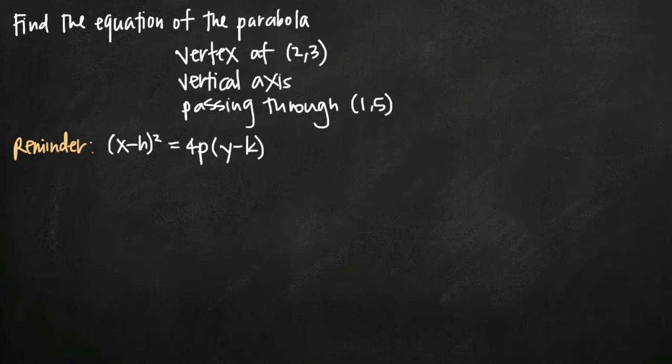Today we're going to be talking about how to find the equation of a parabola. In this particular problem we've been given that the vertex of the parabola is at the point (2,3), that the parabola has a vertical axis and that the parabola passes through the point (1,5).